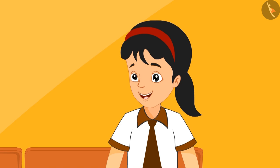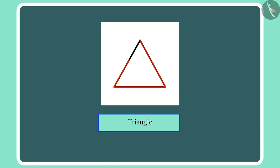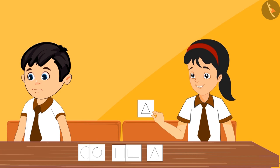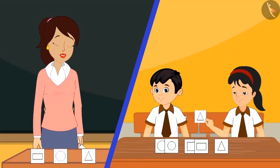Ma'am, why do we call this a triangle? Pinky, because this shape is made of three lines. That's why we call it a triangle. Then that means this is also a triangle, right? Yes, Pinky. You are right. This is also a triangle.